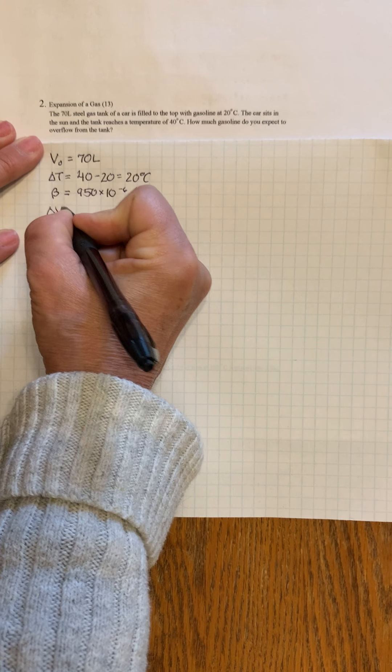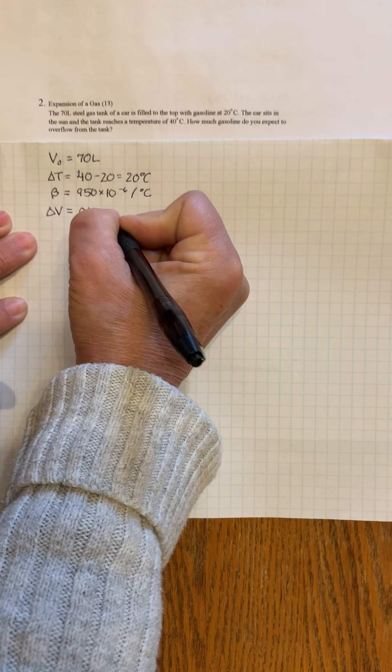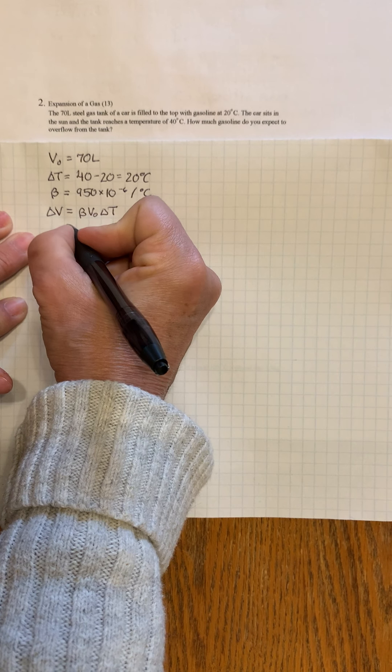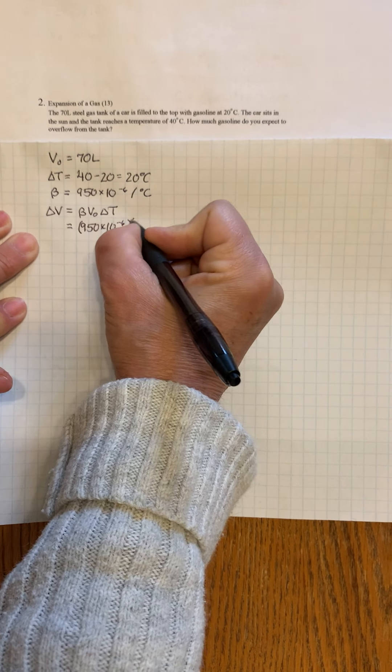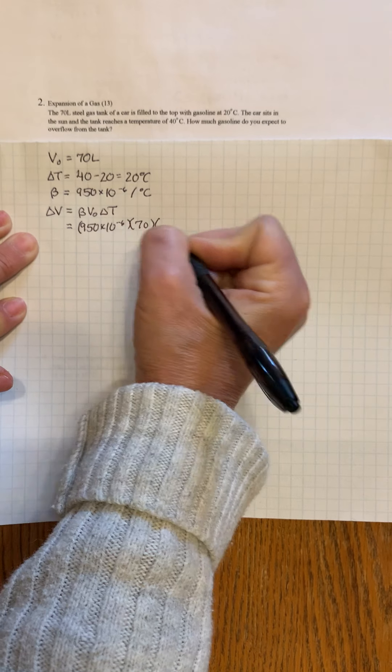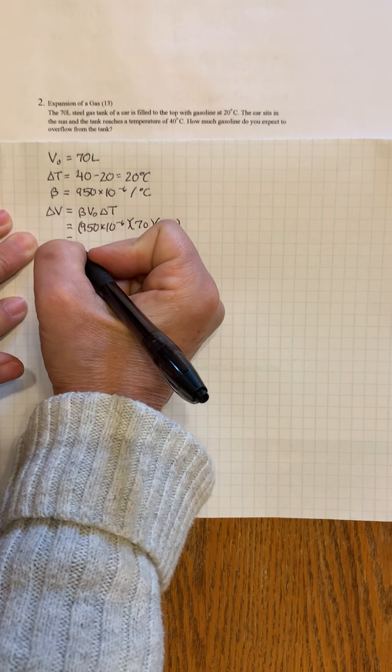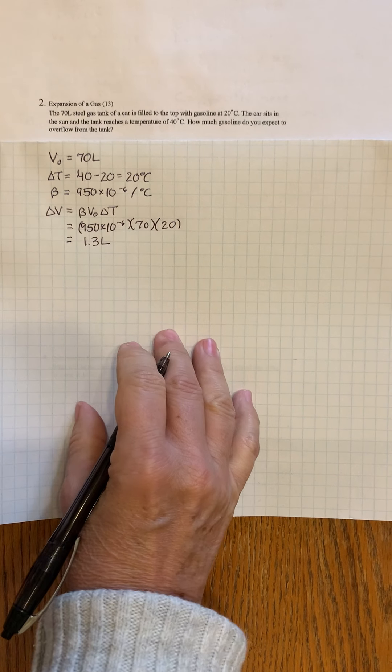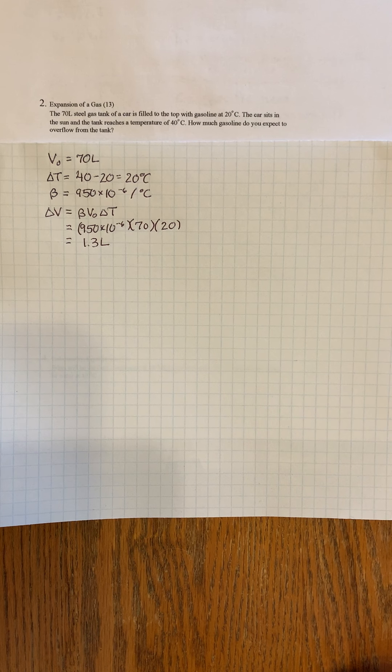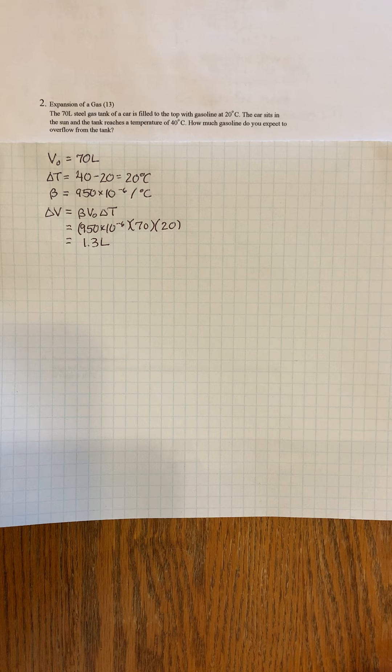We are looking for delta V. The formula for delta V is beta times V₀ times delta T. So this is going to be 950 times 10⁻⁶ times 70 times 20. That equals 1.3 liters. Now in all actuality, technically speaking, the container is also going to expand. But for the purposes of Occam's razor, we're going to ignore that.